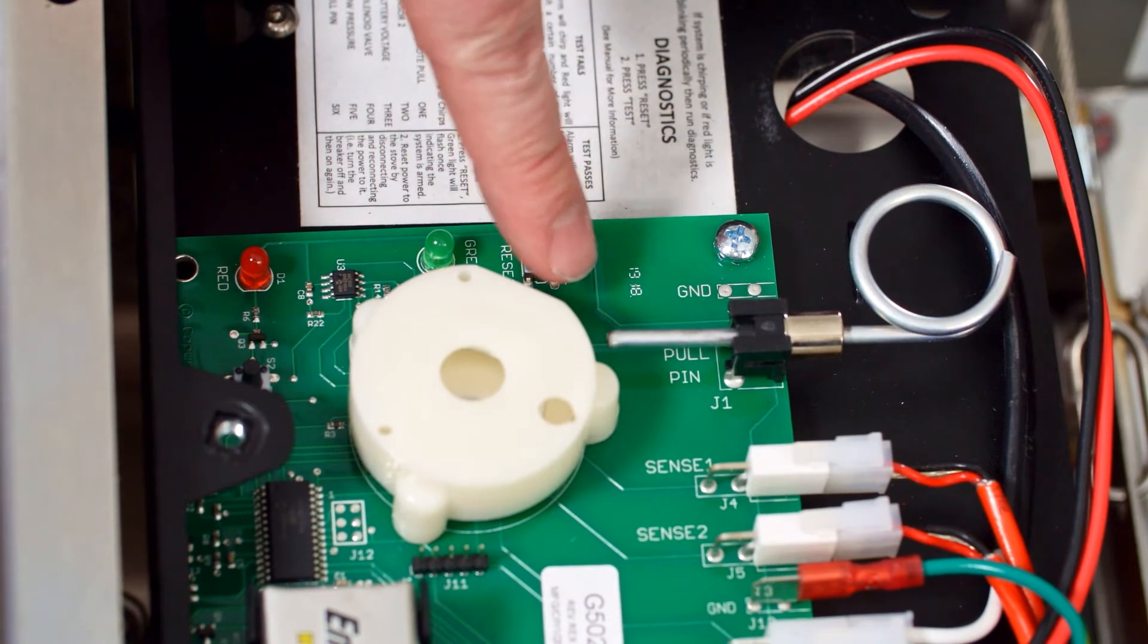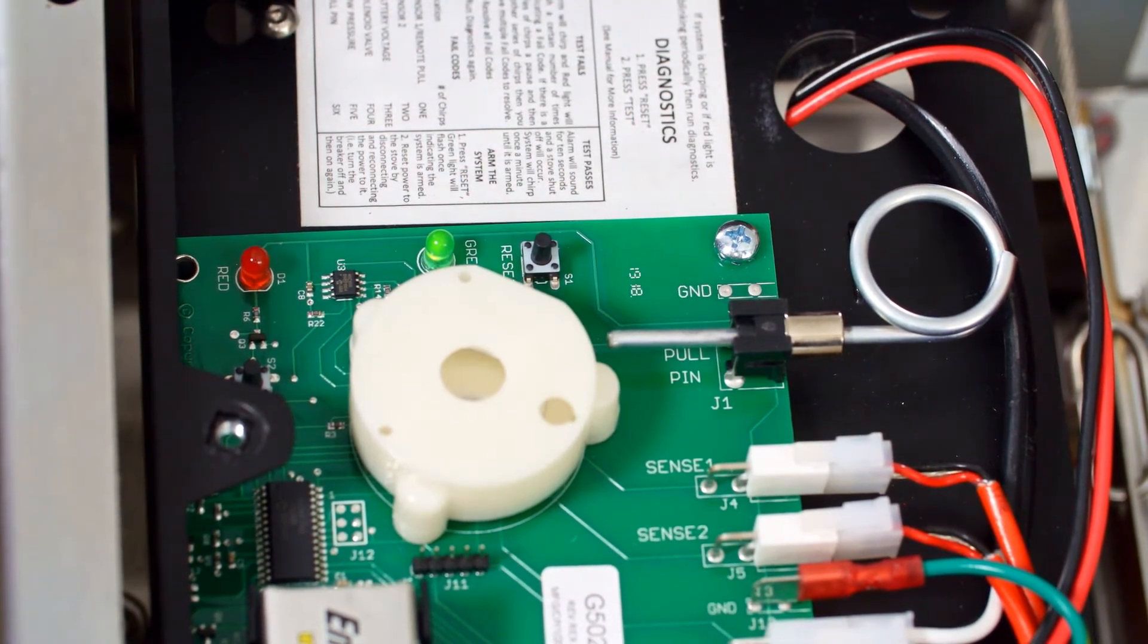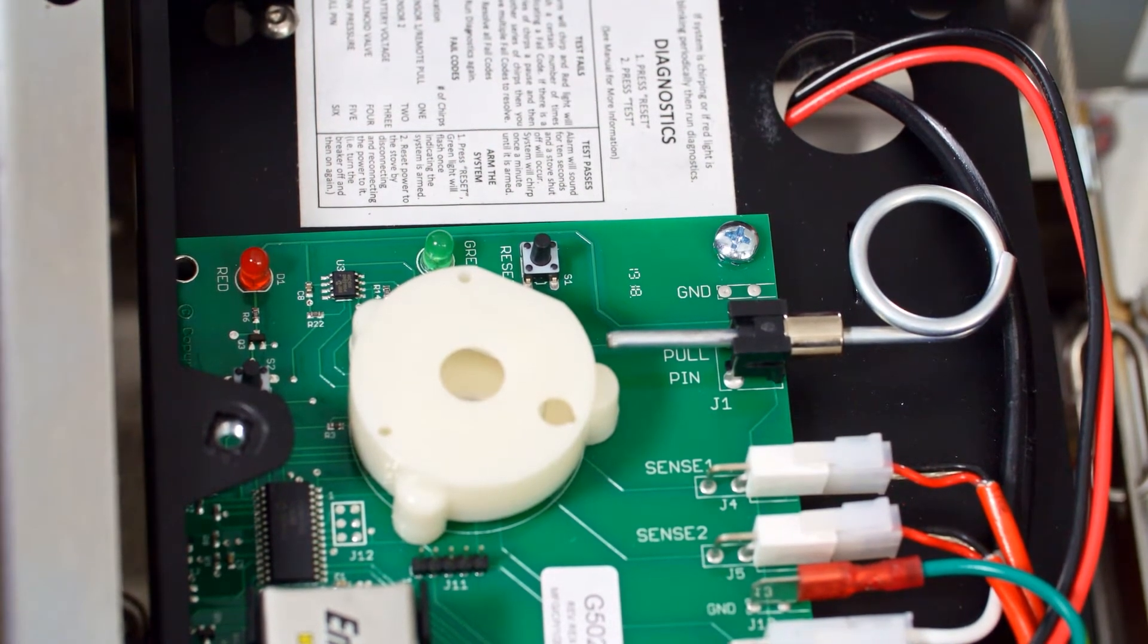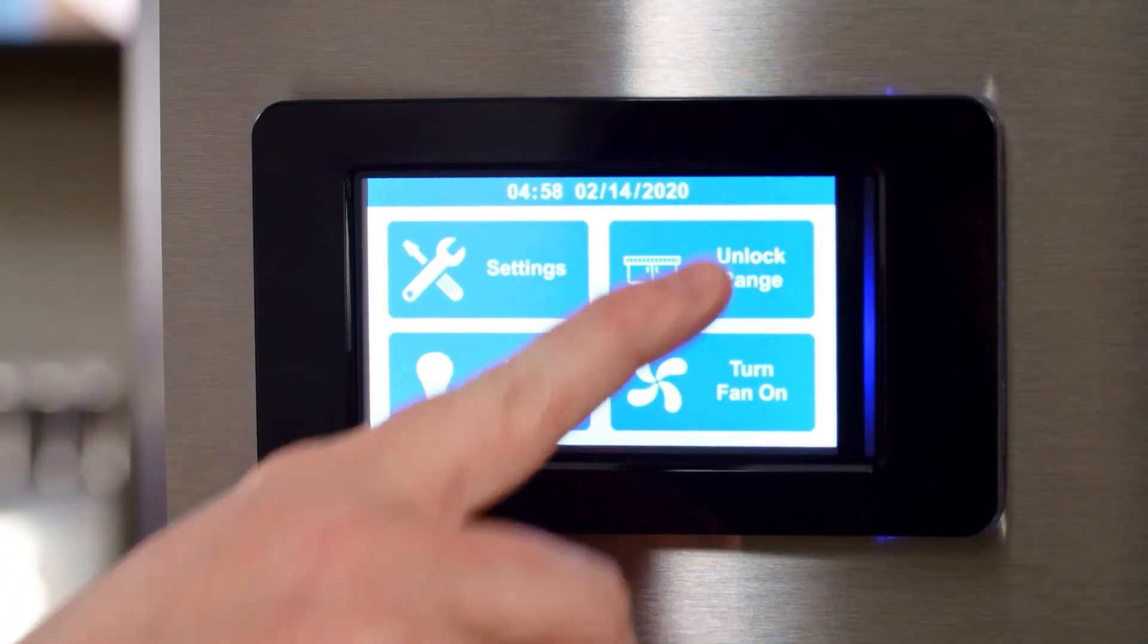Reset the control board by pressing the reset button and confirm the green indicator momentarily lights up. Make sure all burners are off, then unlock the range via the touch screen.